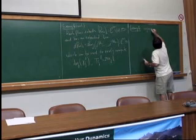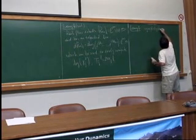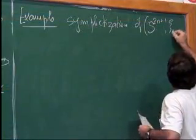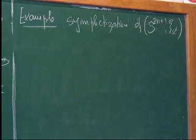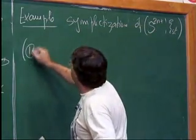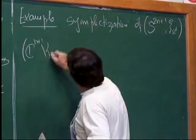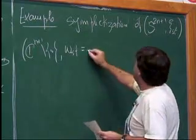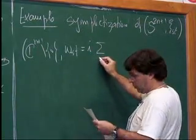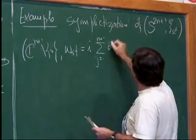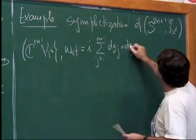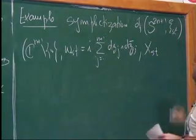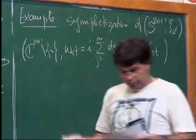The symplectization of S^(2n+1) with its standard contact structure is simply C^(n+1) minus the origin, with the standard symplectic form in complex coordinates and the standard radial Liouville vector field.